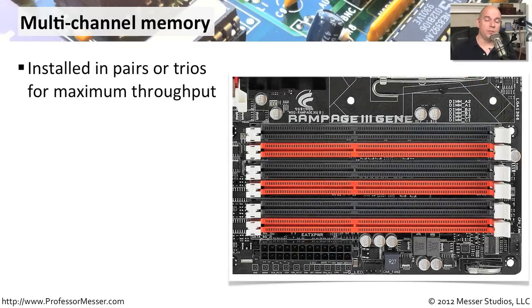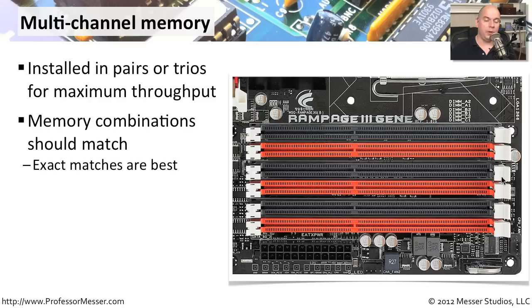Some motherboards may be configured to use multi-channel memory. This is memory that has maximum throughput if we're filling up two or even three slots of memory on the motherboard. These are usually installed in pairs or trios, and the motherboard itself will be colored so we can see exactly where to put them.